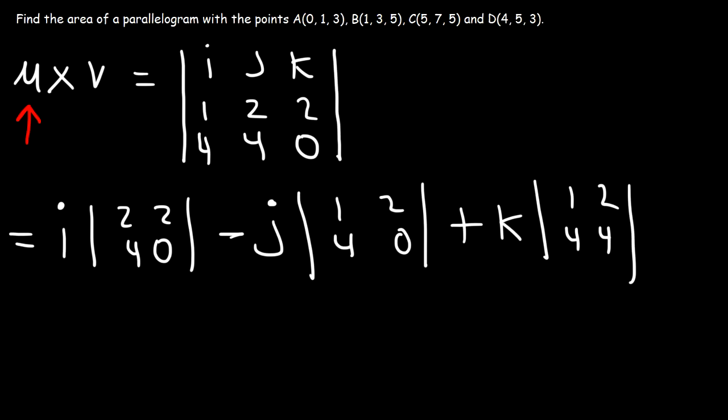Our next step involves finding the determinant of a 2 by 2 matrix. So here is a 2 by 2 matrix. And to find the determinant, it's going to be a times d minus b times c. So in this example, it's going to be i, and then 2 times 0, which is 0, minus 2 times 4, and that's 8.